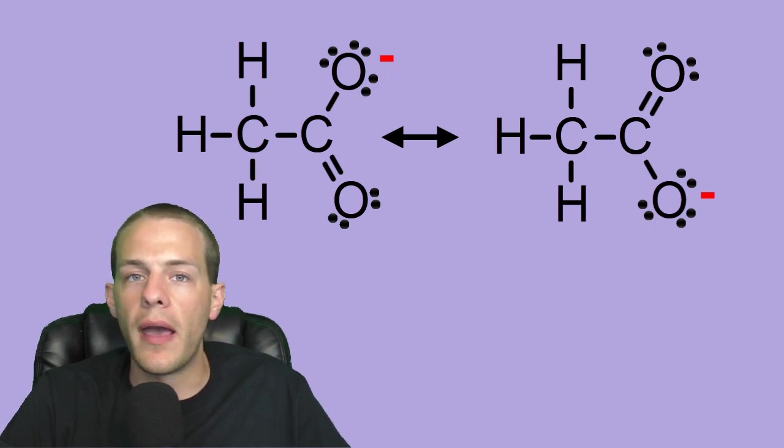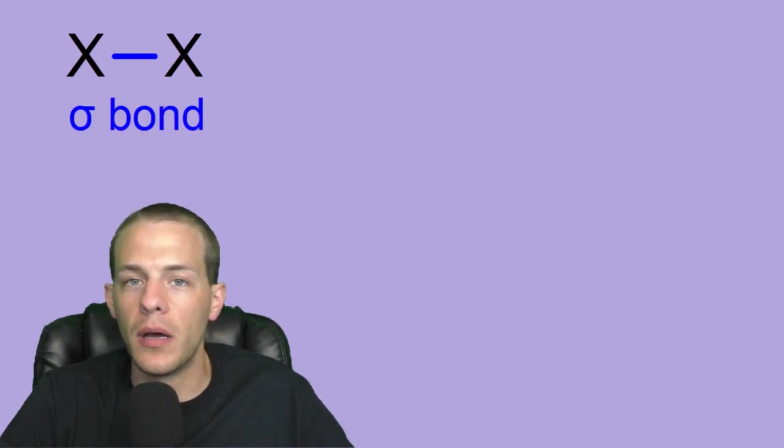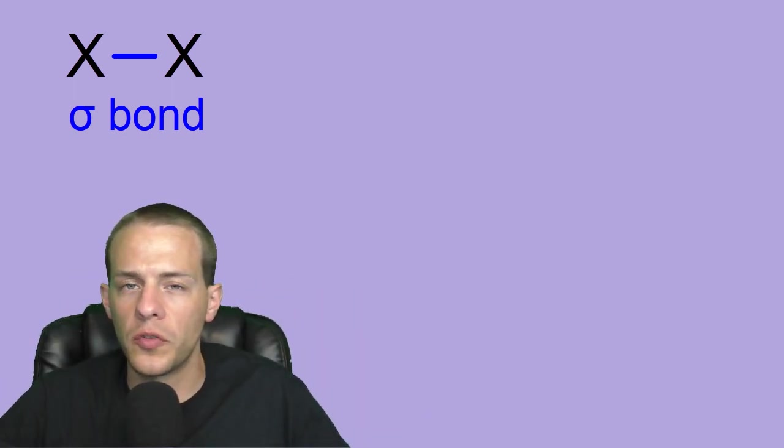And to understand that, you need to understand the nature of double and triple covalent bonds. So let's talk about that a little bit. So if you think any single covalent bond, imagine a single covalent bond, one pair of electrons shared between two atoms. That single covalent bond is called a sigma bond. This is a Greek letter sigma. So any single bond is composed of a sigma bond, which basically is just a head on overlap of orbitals, which we'll talk about in more detail later on in another video.